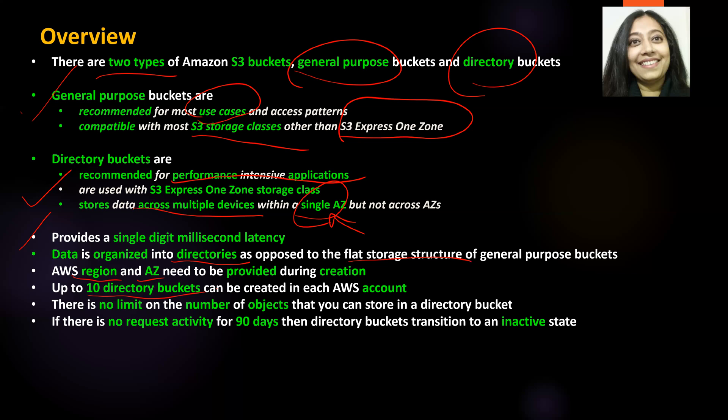You can create up to 10 directory buckets in an AWS account — remember that number is at an account level, not at a region level. There is no limit on the number of objects you can store in a directory bucket. If there is absolutely no activity — no requests, no transactions — for 90 days, the bucket transitions into an inactive state.